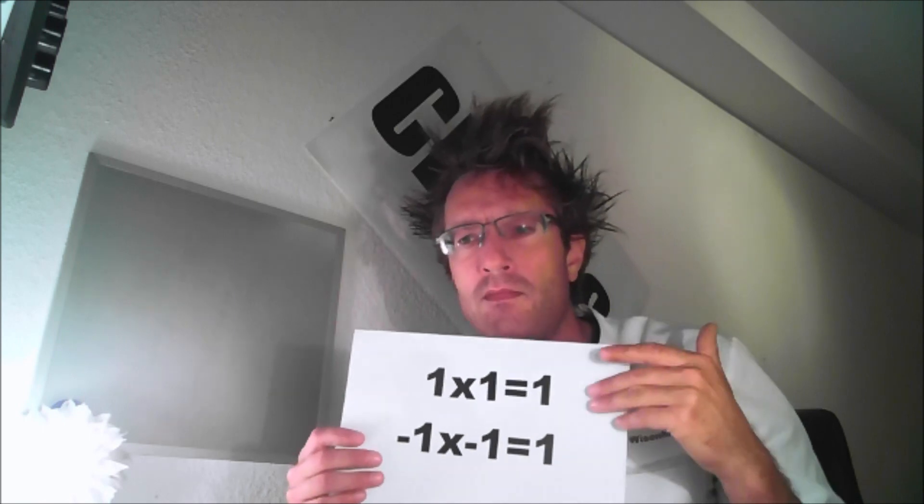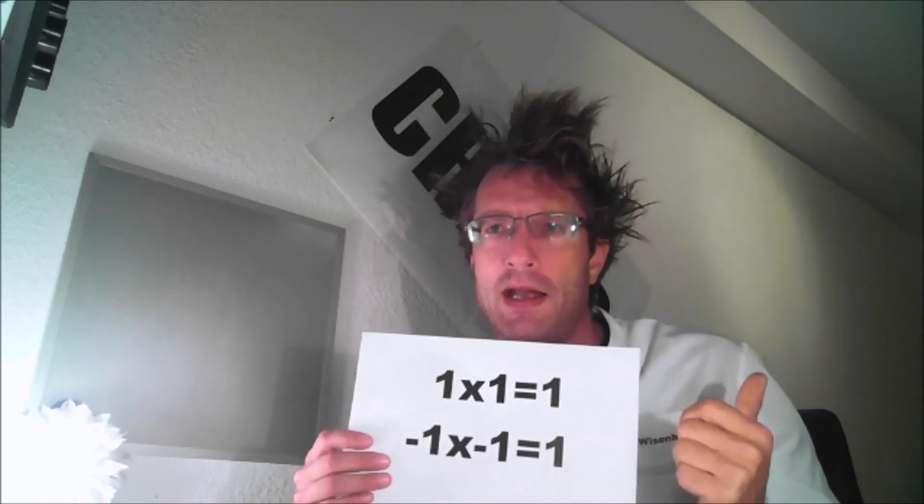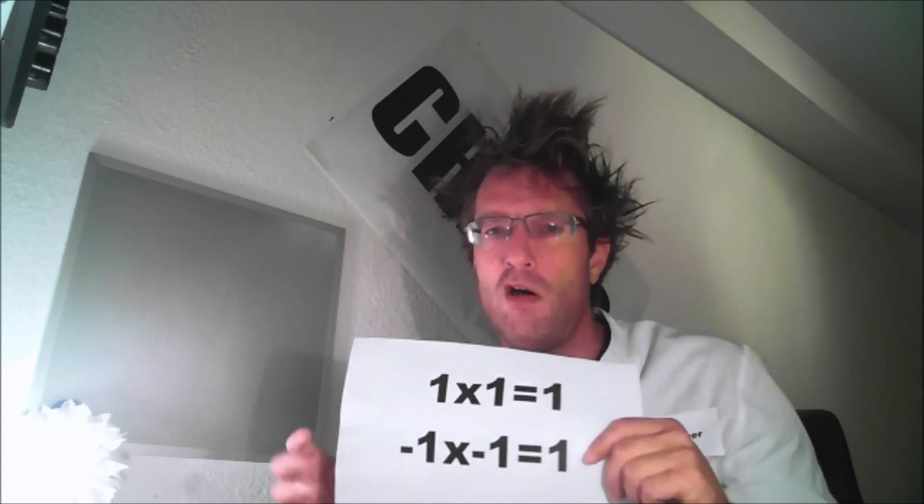Carl Friedrich Gauss introduced the complex numbers because there was no way to express the square root of a negative number. Hence the result of a multiplication can never be negative when squared, because 1 times 1 is 1 and negative 1 times negative 1 is 1 as well. So you cannot have a square root of negative 1.